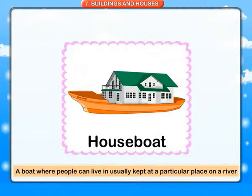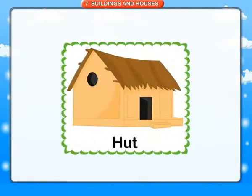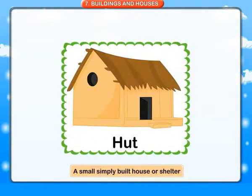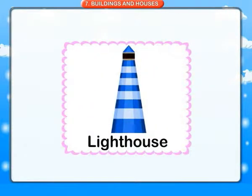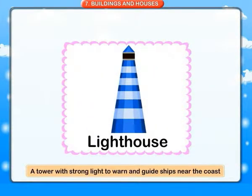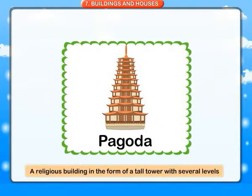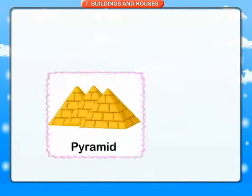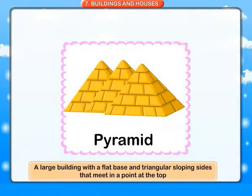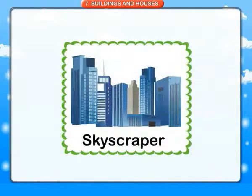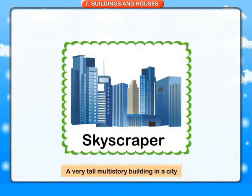Houseboat: a boat where people can live, usually kept at a particular place on a river. Hut: a small simply built house or shelter. Lighthouse: a tower with a strong light to warn and guide ships near the coast. Pagoda: a religious building in the form of a tall tower with several levels.